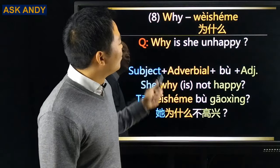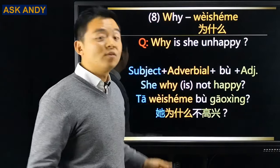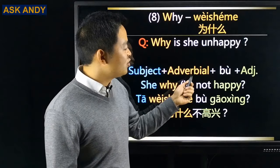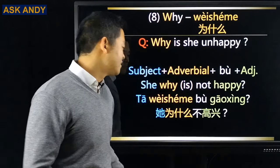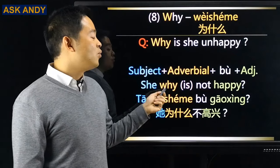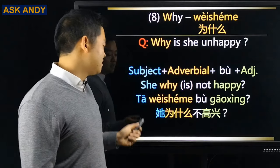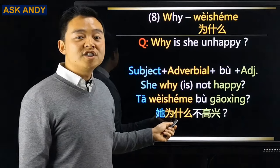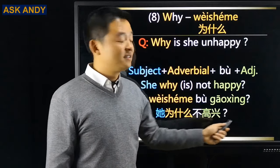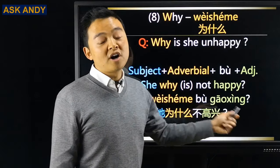Another pattern with why: Subject + Adverbial + 不 + Adjective. 'Why is she unhappy?' → she / why / is not happy → 她为什么不高兴?